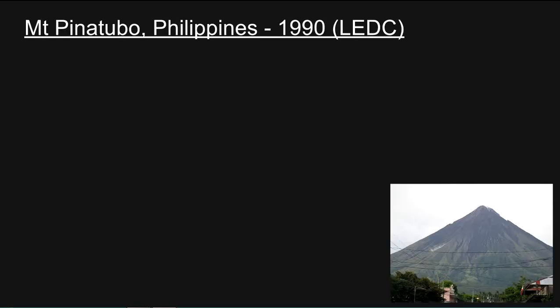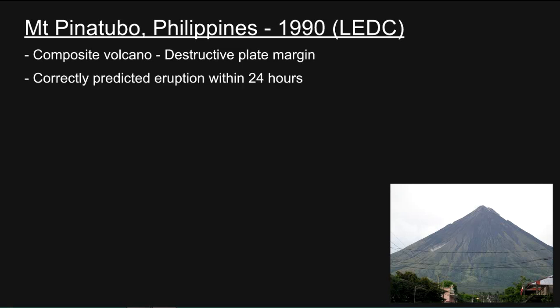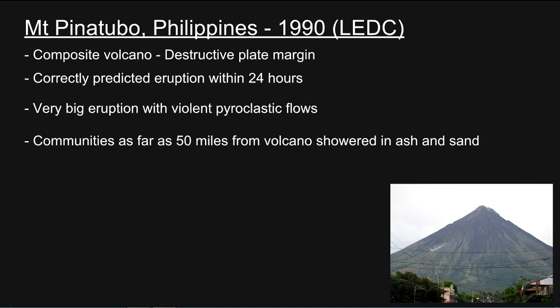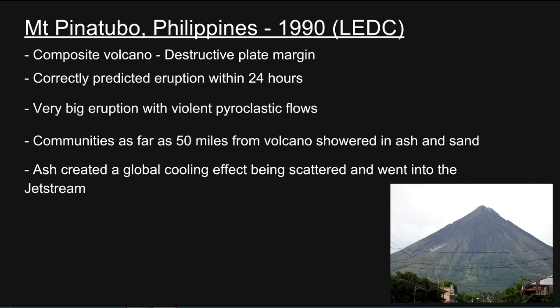Mount Pinatubo in the Philippines. Composite volcano at a destructive plate margin. The eruption was correctly predicted within 24 hours. Very big eruption with violent pyroclastic flows. Communities as far as 50 miles from the volcano were showered in ash and sand. Ash created a global cooling effect, being scattered and going into the jet stream. Ash went up 100,000 feet in the air.